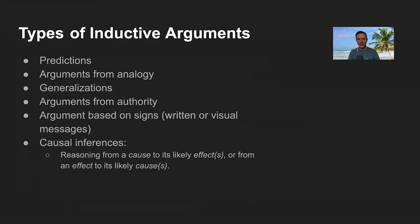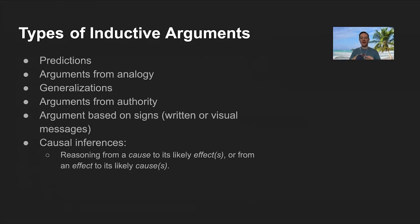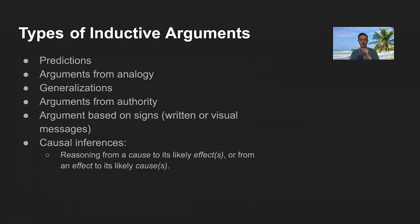Causal inferences — not casual — are arguments that reason from a cause to its likely effect, or from an effect to its likely causes. You can always imagine more than one cause producing any given effect, and more than one effect following from any given cause. So arguments relying on cause-and-effect relationships are always inductive arguments.